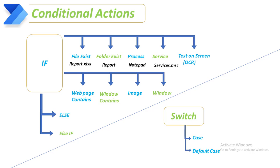Next is 'text on screen'. If I have any screen and I want to check whether it contains certain text or not, that is related to OCR — optical character recognition. In the same way, 'if web page contains': if my web page contains any kind of element or text and I need to check it, I will use 'if web page contains'. Similarly for windows, if I want to check whether a particular UI element or text is available in a window, I will use 'if window contains'. For 'if image', sometimes we need to check whether a particular image is available or not — in that case we use the 'if image' conditional action.